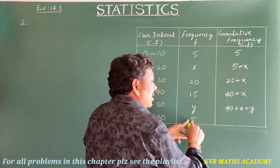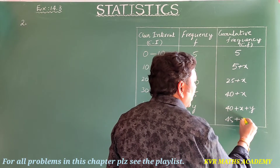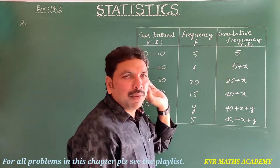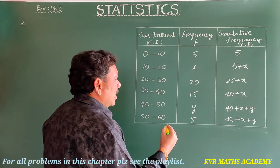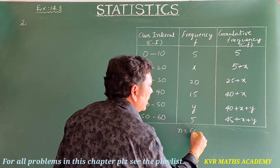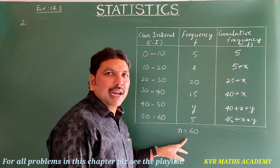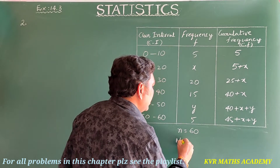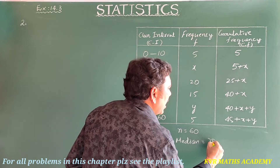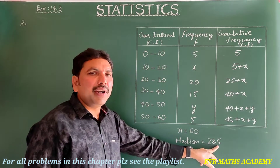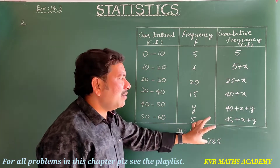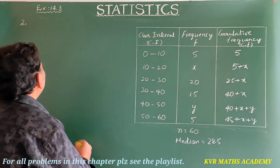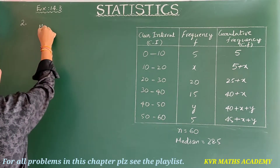The final cumulative frequency is 45+x+y. Since n is given as 60 and the median is given as 28.5, we use these values along with the table to find x and y.